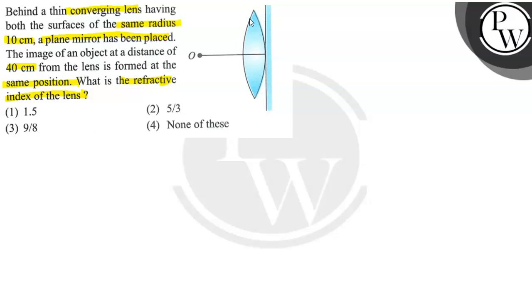The image of an object which is located at a distance of 40 cm from the lens is formed at the same distance. We will find what is the refractive index of the medium.